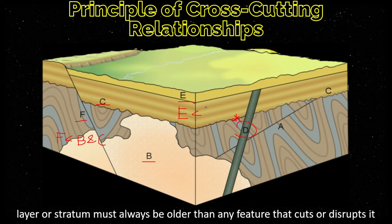E was then deposited after the intrusion of rock D. Fault F, on the other hand, is the youngest of all because it was able to cut through rock E — so F is the youngest. However, E was eroded out on the other side of the fault block.